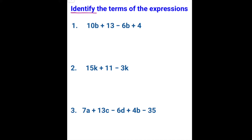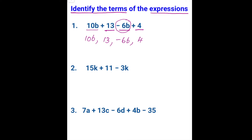Now we are going to identify the terms of the expressions. The first expression is 10b plus 13 minus 6b plus 4. You can see there are 4 different parts for this expression. When we list the terms, you need to consider the subtracting 6b as adding a negative 6b. So the terms are 10b, 13, negative 6b, and positive 4.